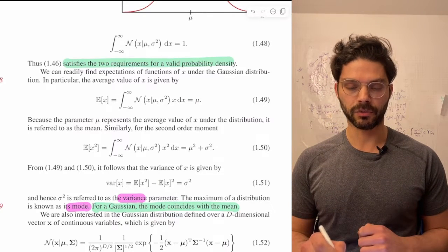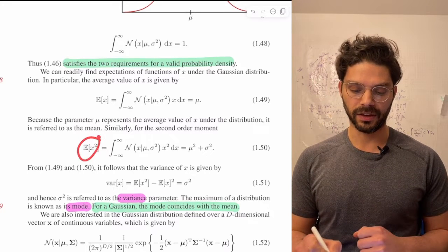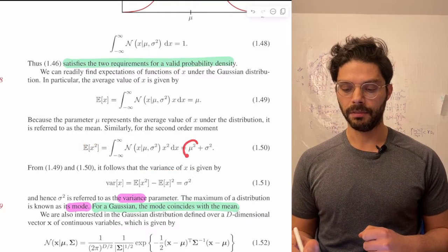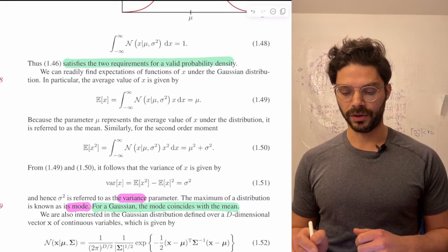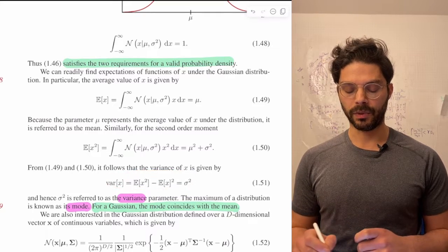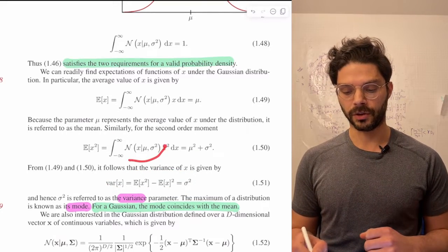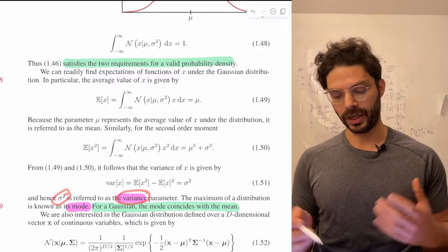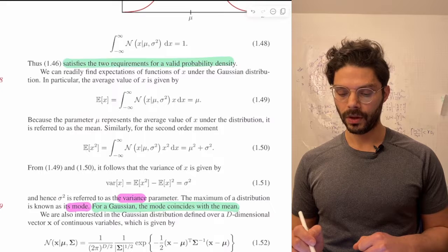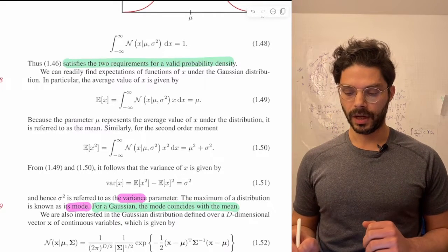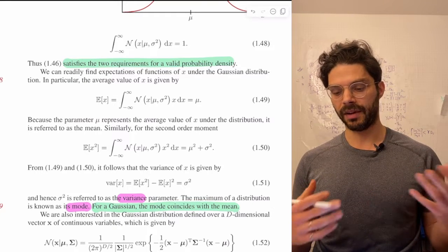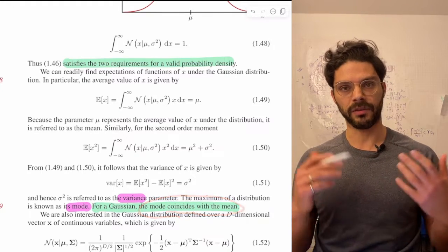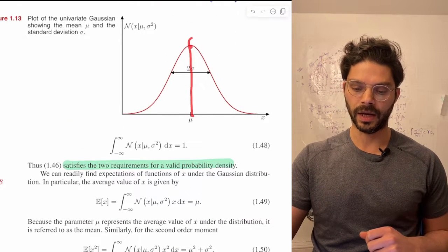Next, we compute the expectation of x squared. We'll be combining this with the previous result to get the variance. The expectation of x squared turns out to be mu squared plus sigma squared. Using the formula for variance, the variance of x distributed as Normal(mu, sigma squared) is sigma squared — that's why we call it the variance. Also, for the Gaussian, the mode and the mean are the same, which you can see because the mean lines up with the maximum value.